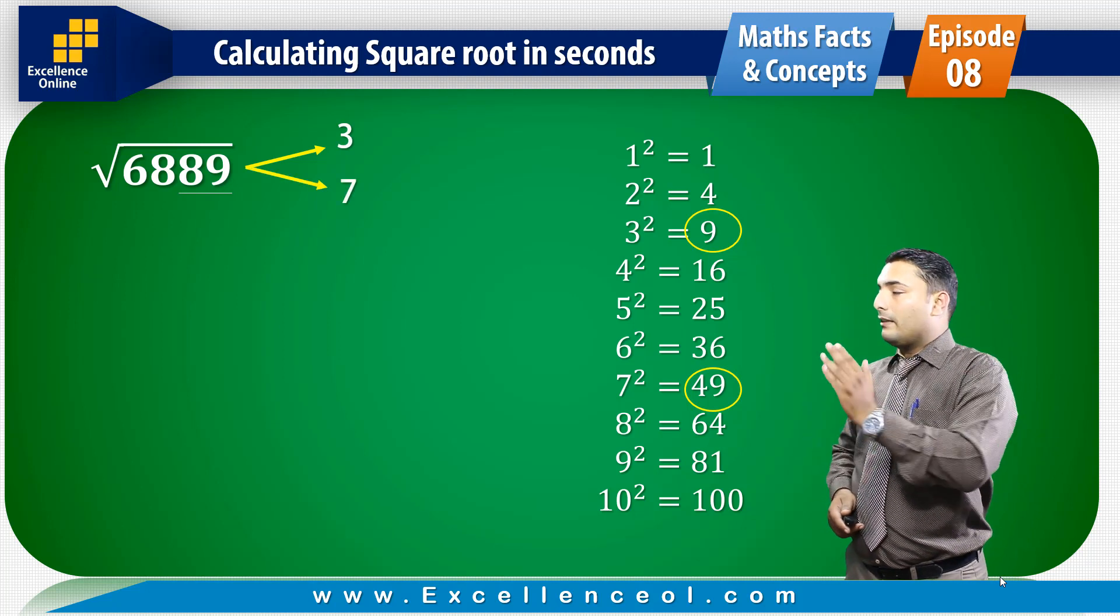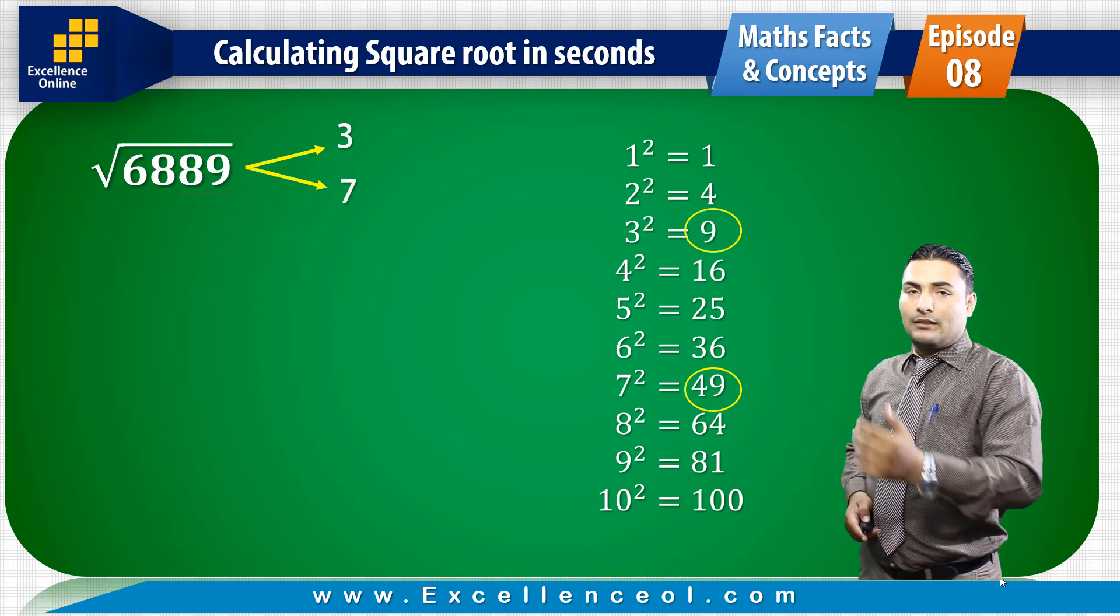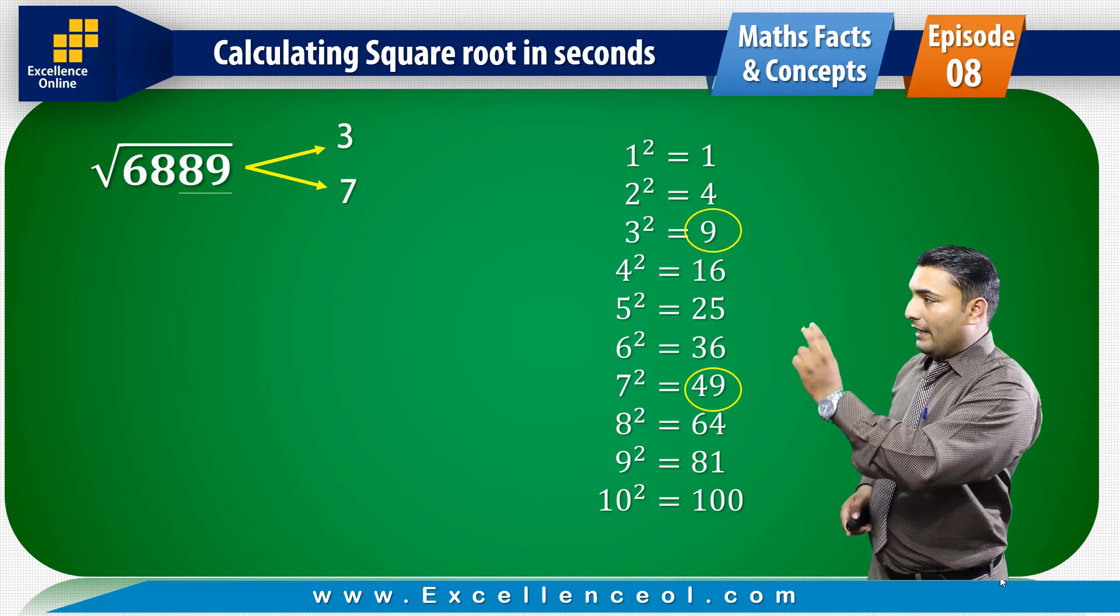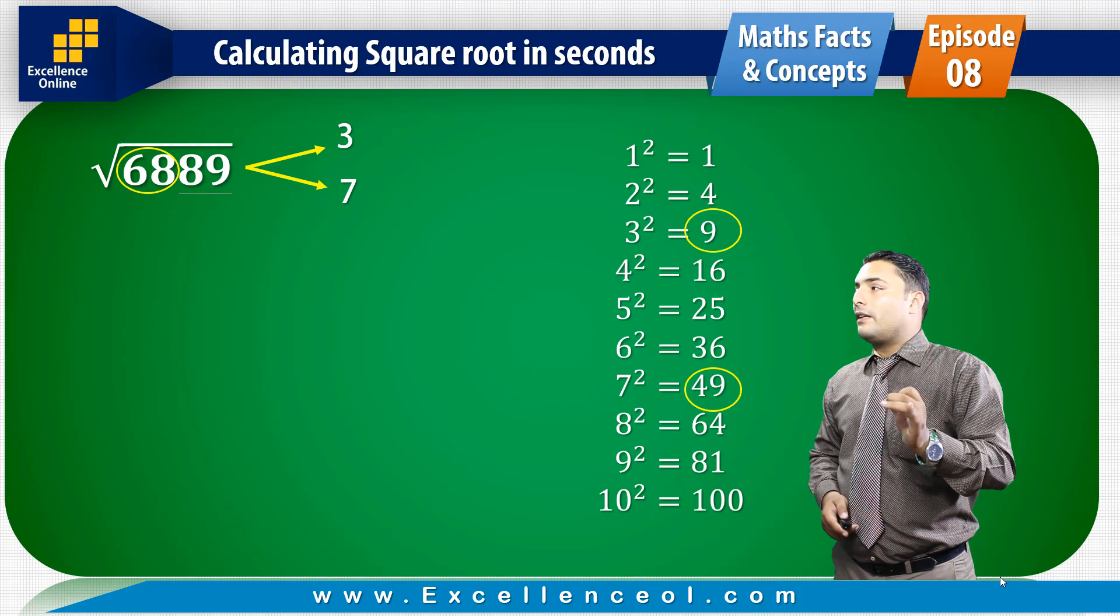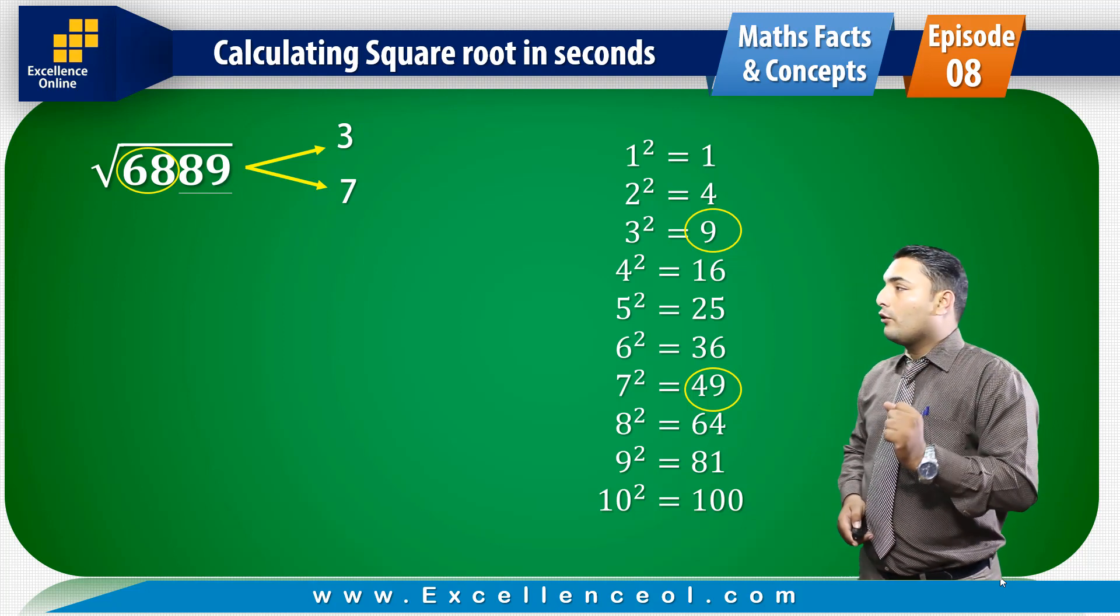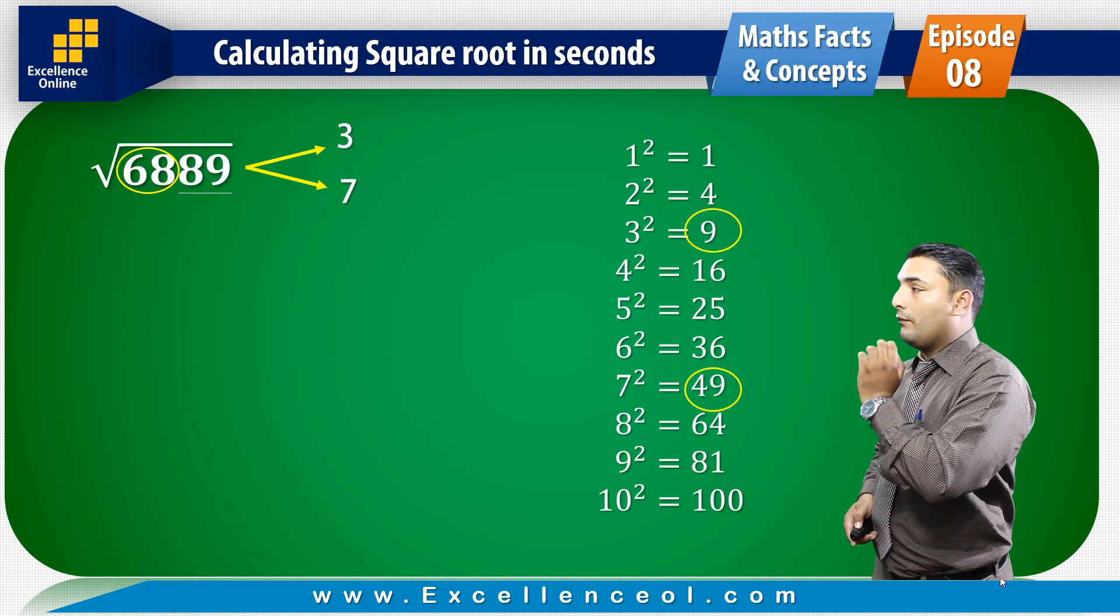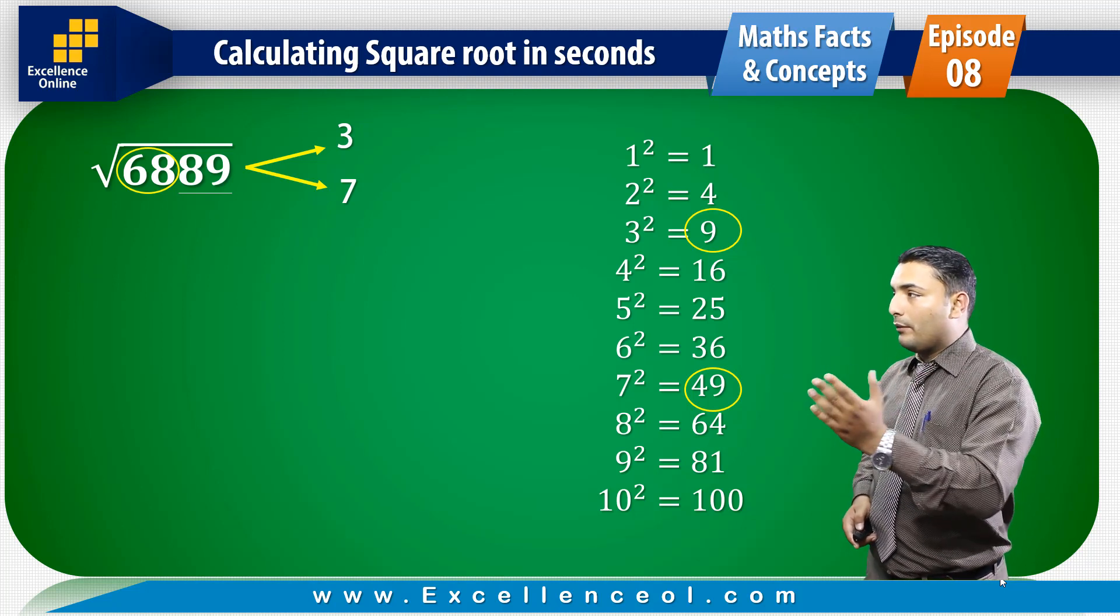Now, we have to decide if it's 3 or 7. The remaining number is 68. We have to see which perfect square is less than 68. It is 64. 64 square root is 8, so we have to write 8.